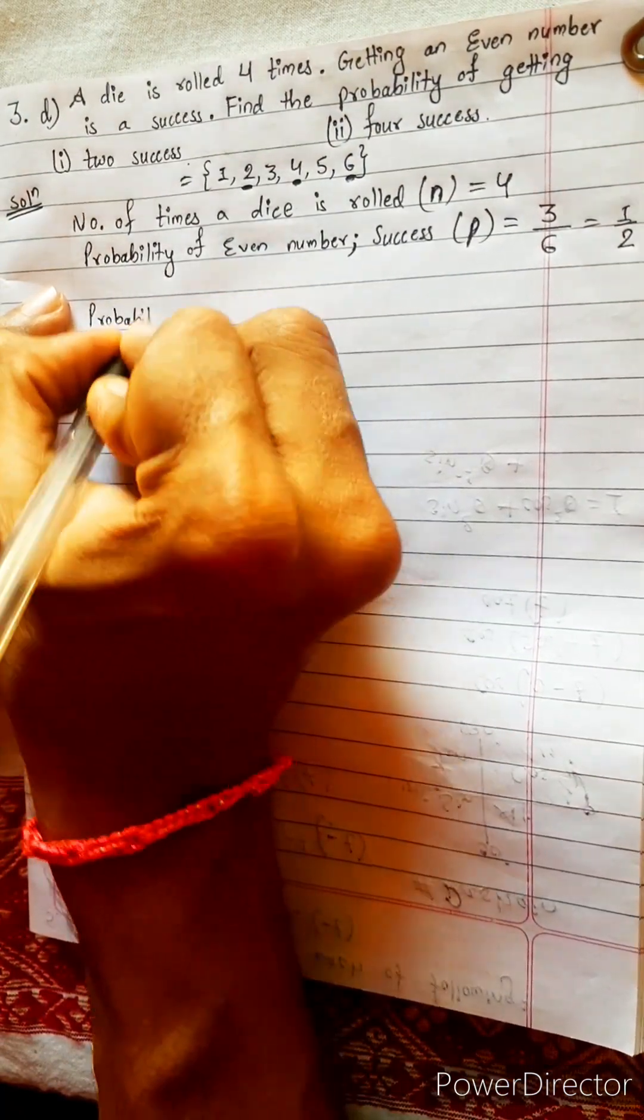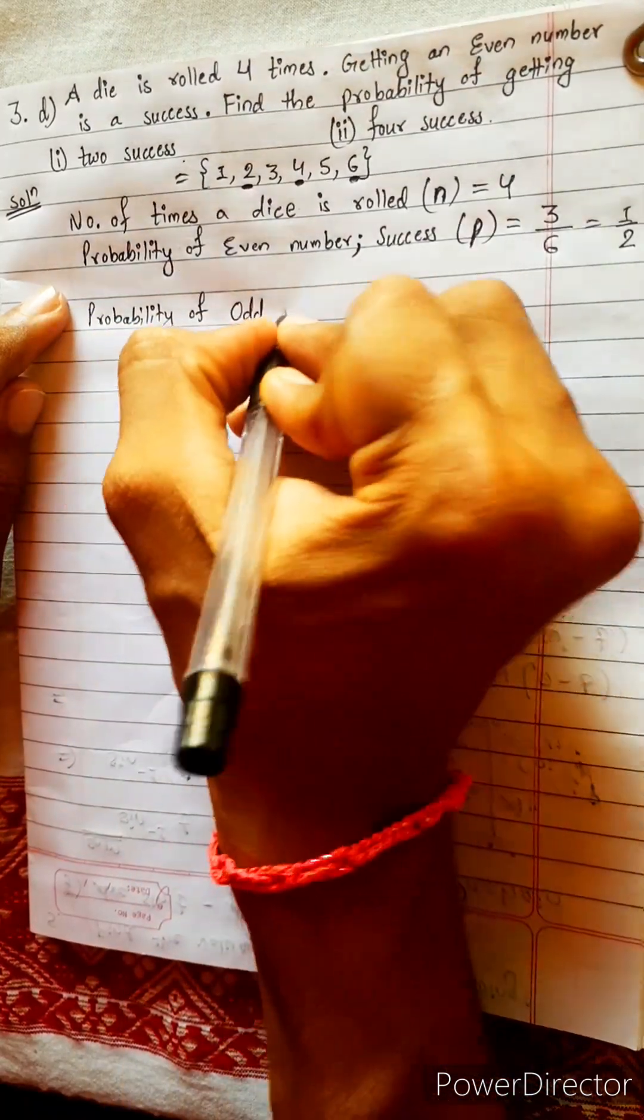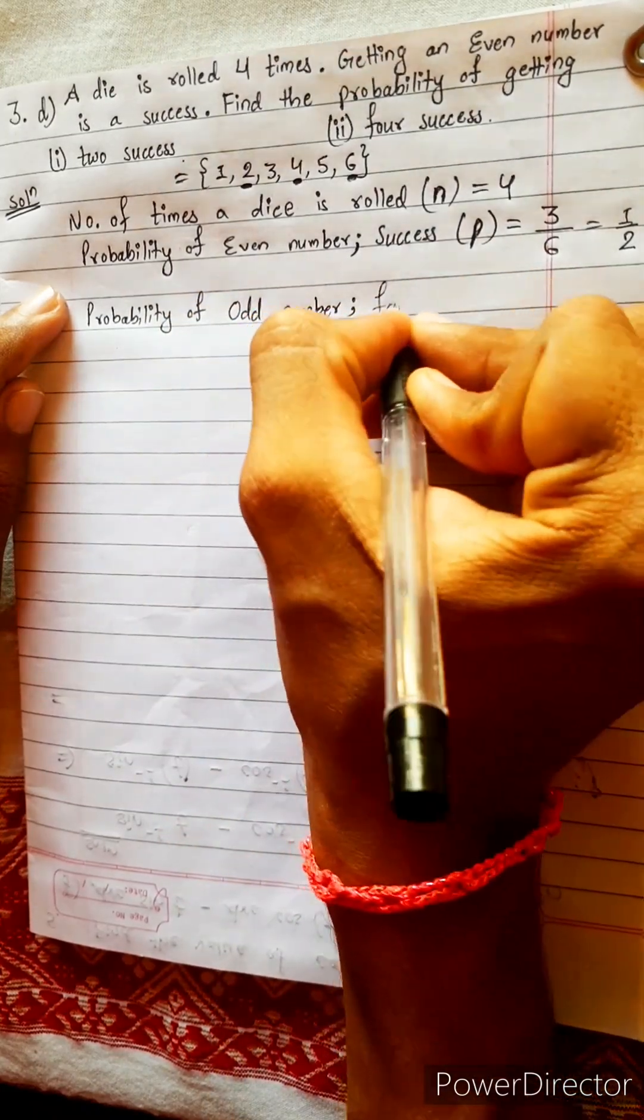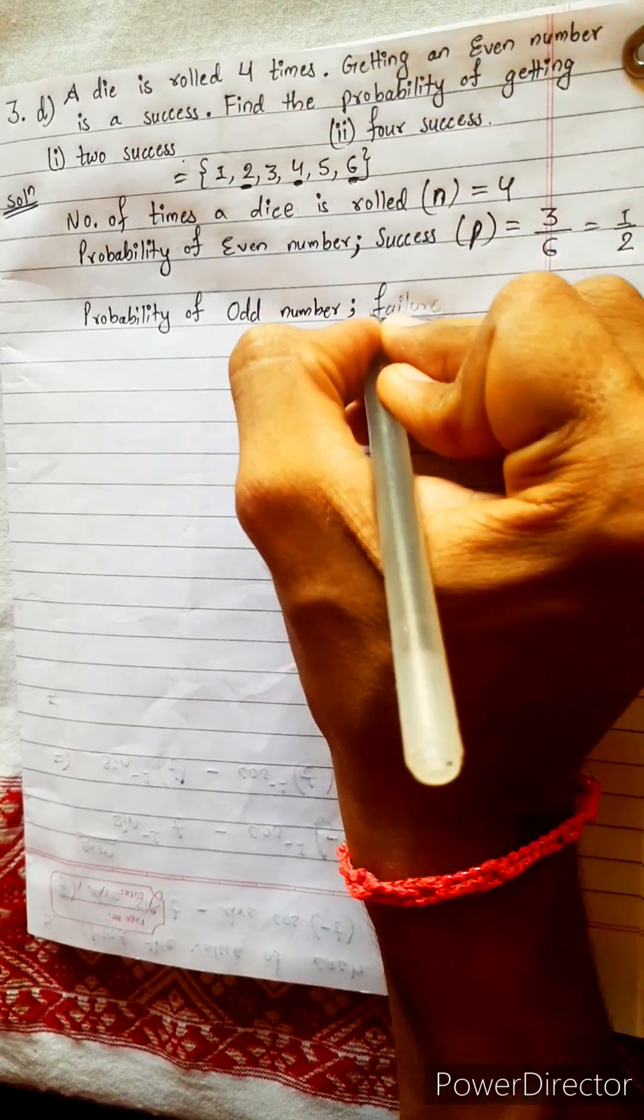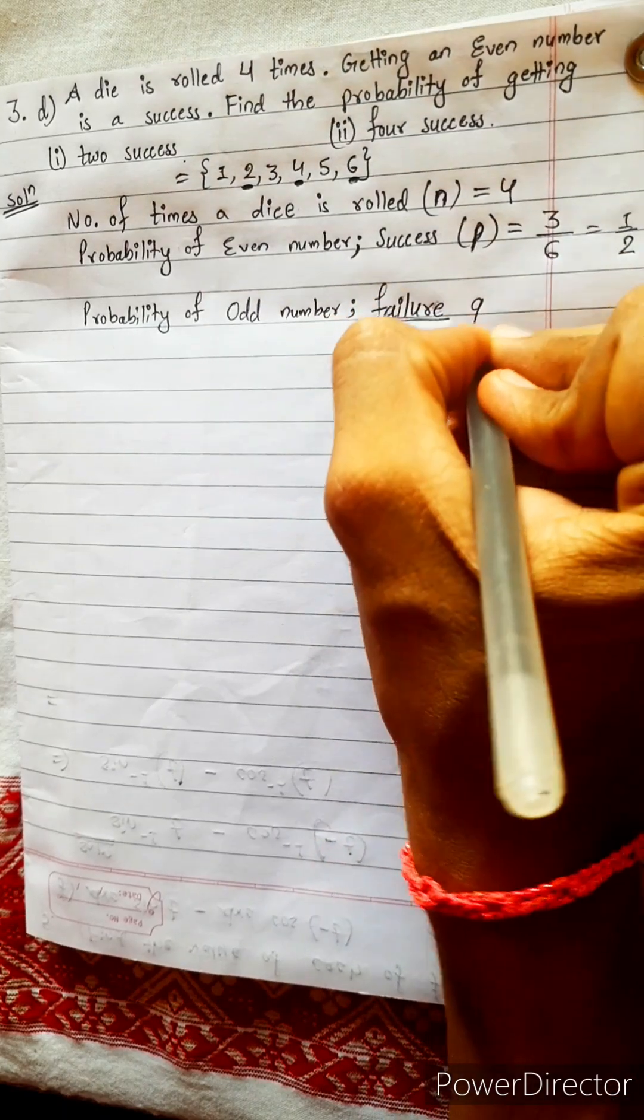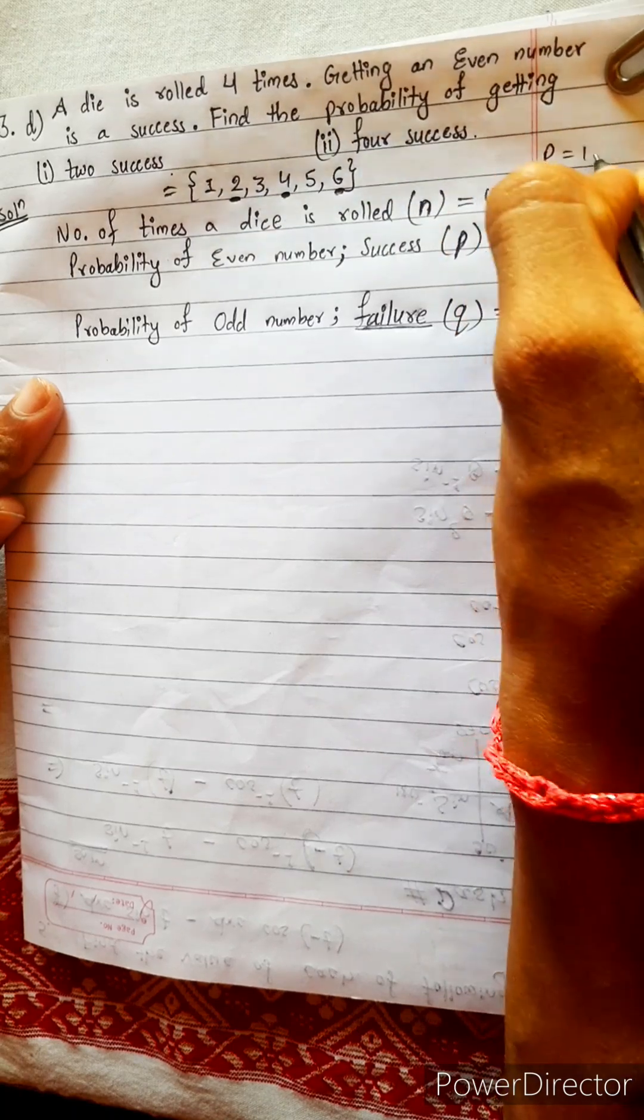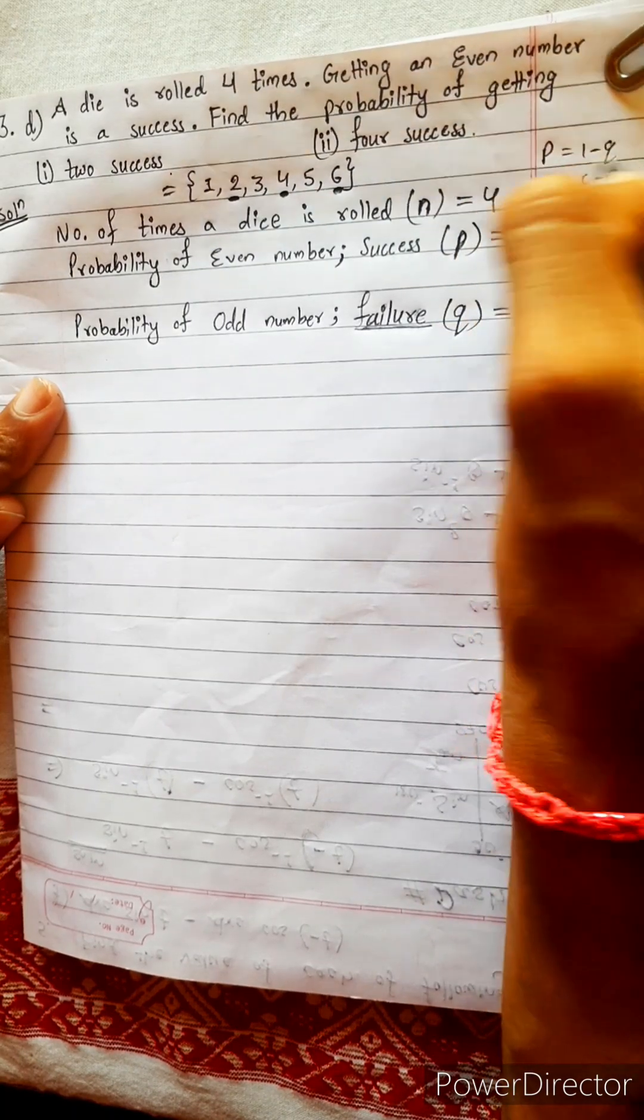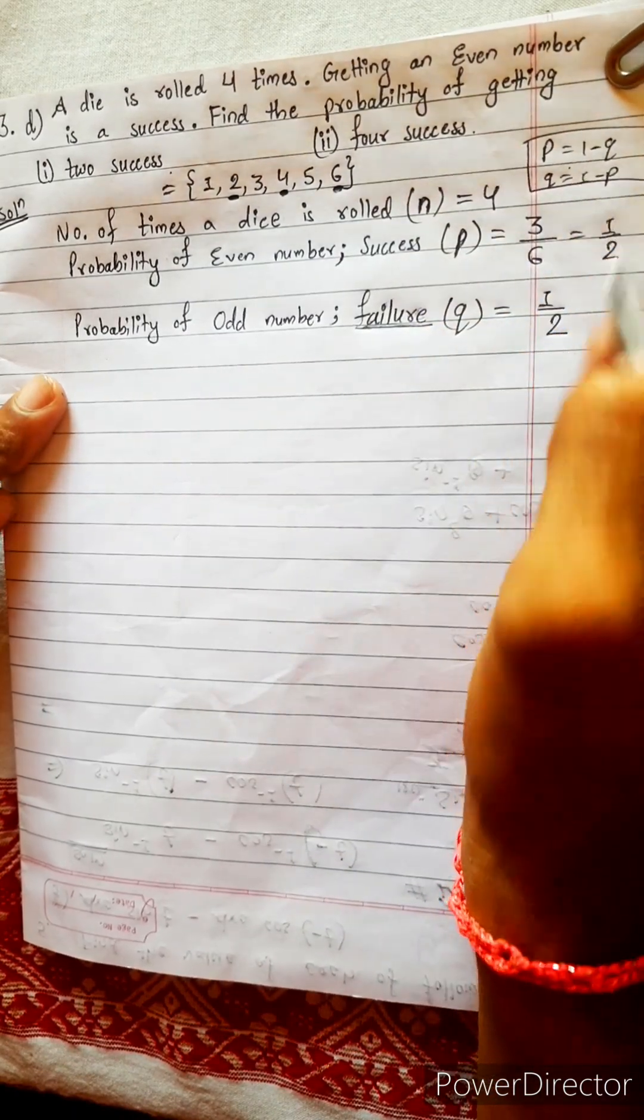So, probability of opposite of even, it is odd. Probability of odd number. This is our failure. Our pain also failure. Probability of failure, failure we represent by Q. Q fail to. Use this formula: P equals to one minus Q and Q equals to one minus P. Because by any method you will get same result. One by two, one minus one by two, one by two.